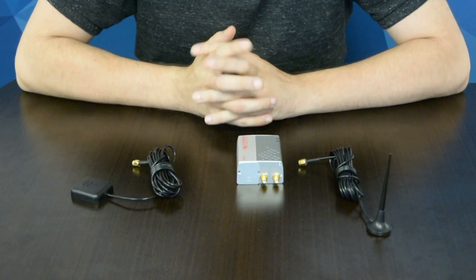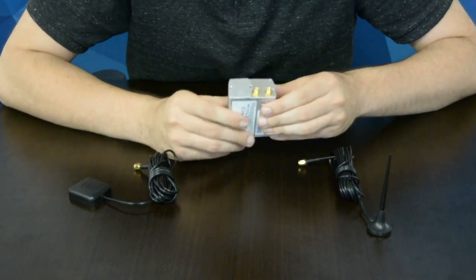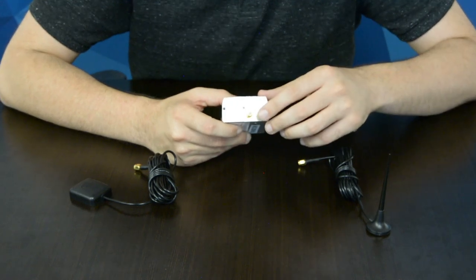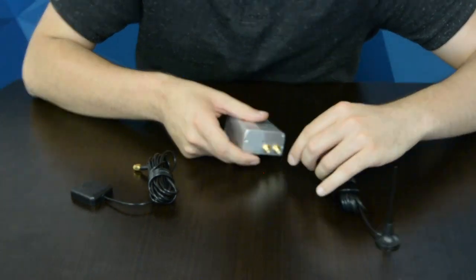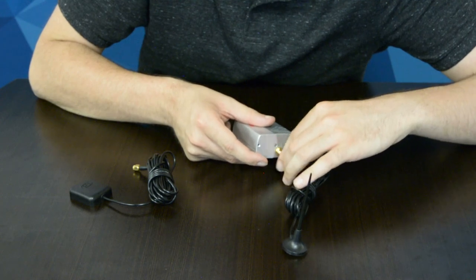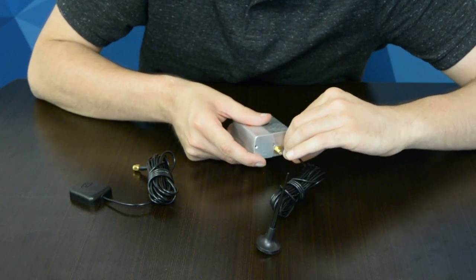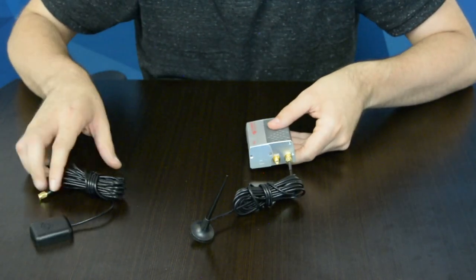And we'll begin by taking a look at the two ports on the back of the FX-30, one for the network and one for the GPS antenna. We'll begin by taking the cellular network antenna and connecting it to its port, and we'll repeat that process for the GPS antenna.